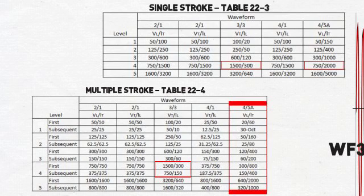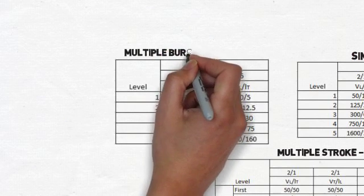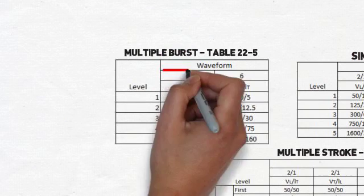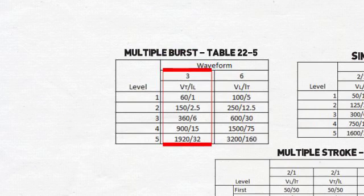Likewise, waveform 5A is tested at 300 volts and 800 amps for the first stroke, while subsequent strokes are tested at 150 volts and 400 amps. And last, category L3 for multiple burst specifies that we will test waveform 3 to level 3.